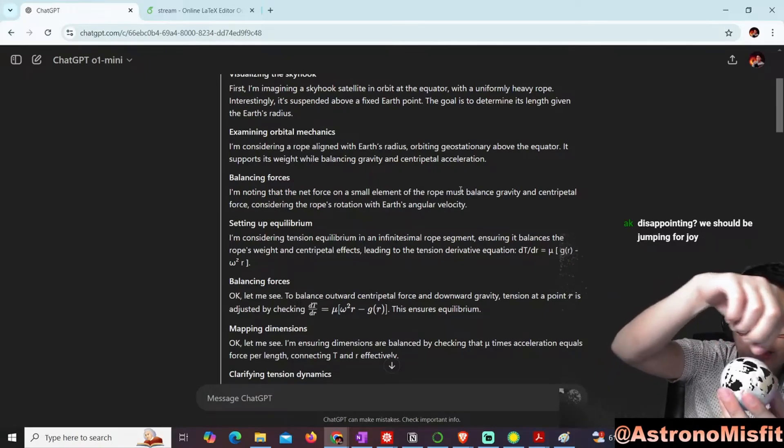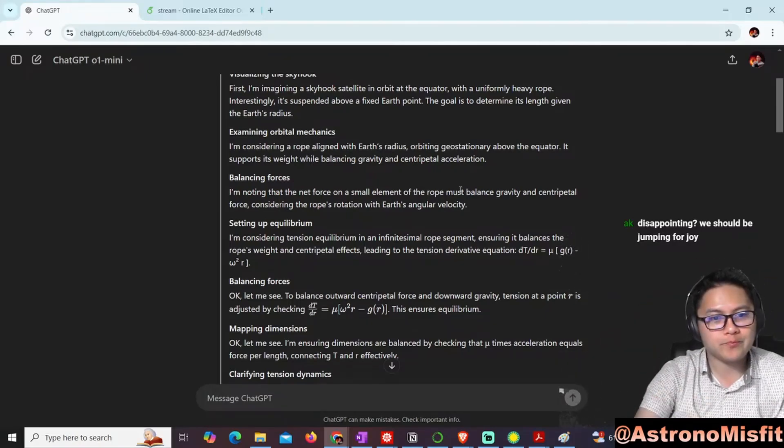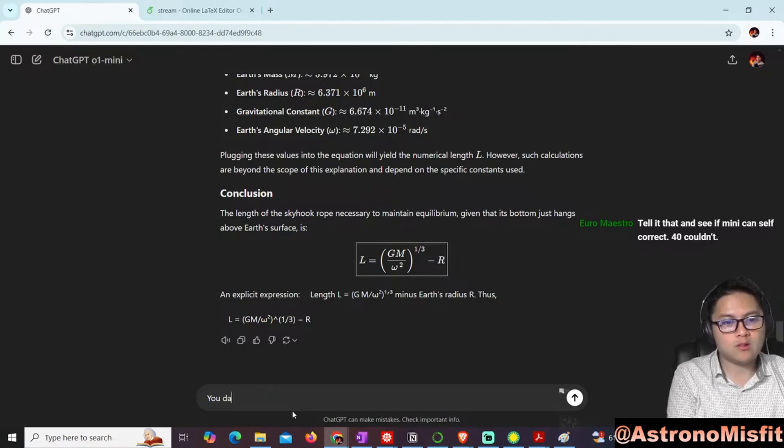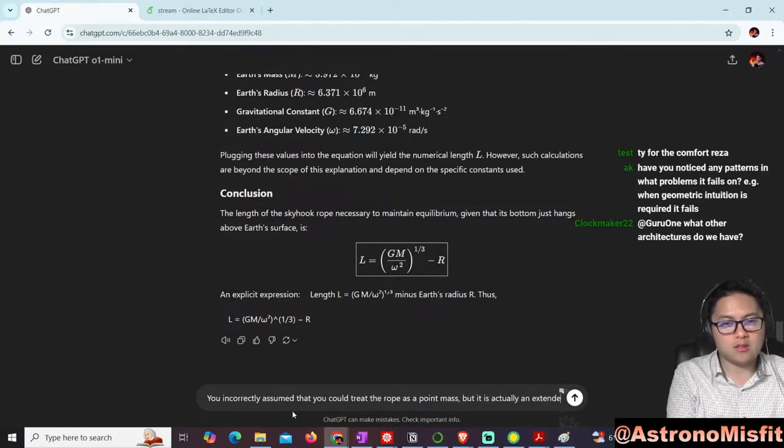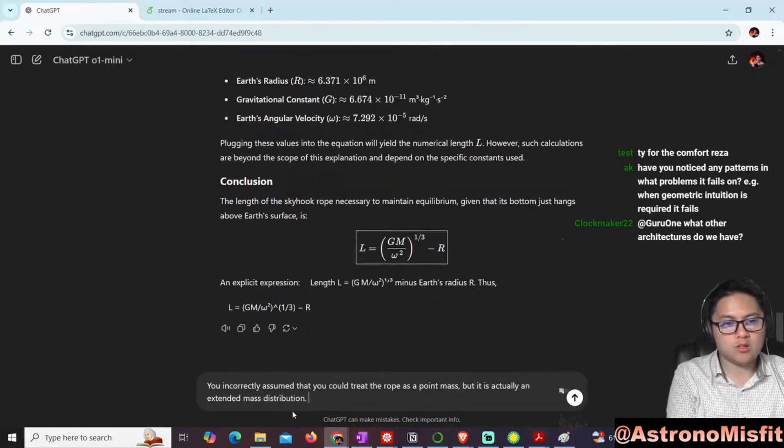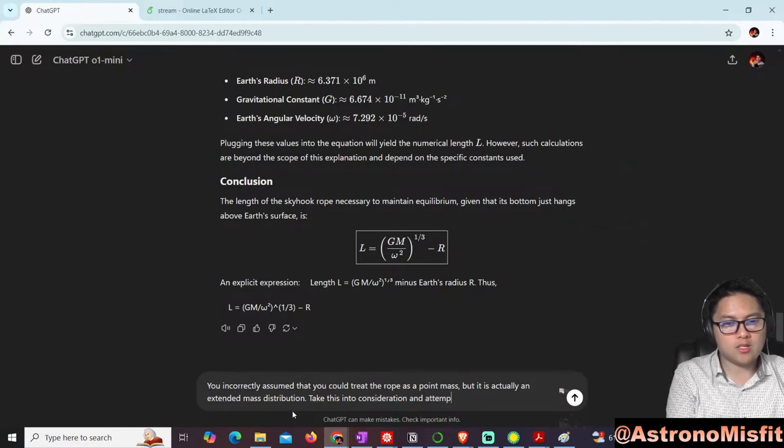So you incorrectly assumed that you could treat the rope as a point mass, but it's actually an extended mass distribution. So take this into consideration and attempt to solve the problem again.